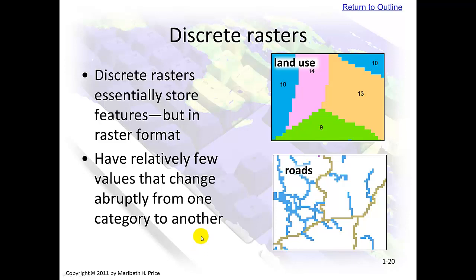Discrete rasters. These are a little different. Discrete rasters essentially store features in the raster format. For example, everything in this blue zone has similar information, everything in the 14 zone is all similar — so these are discrete. They have relatively few values that change abruptly from one category to another. Here we have what looks like roads and also rivers, though it's tough to tell without a legend.